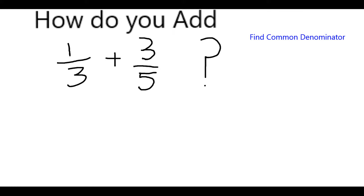When adding fractions, it is useful to come to a common denominator, and then we can just add the numerators. So I want to know what number both 3 and 5 will go into. The smallest thing that they'll both go into is 3 times 5, which is 15. So now I'm going to change both of these fractions so they're over 15.